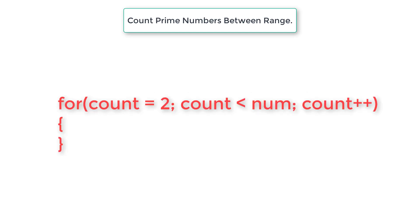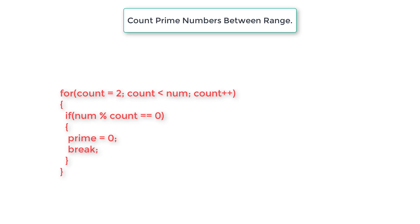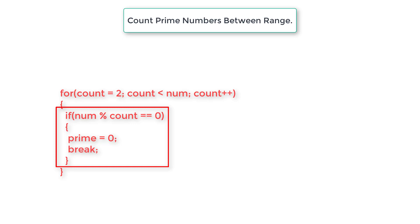Let's look at the code snippet. We start a for loop, assign 2 to count, and iterate until count is less than num — not less than or equal to. We exclude 1 by initializing count to 2, and exclude the number itself by stopping before num. Inside the loop, if the number is perfectly divisible by count, it's not a prime number, so we assign zero to prime.